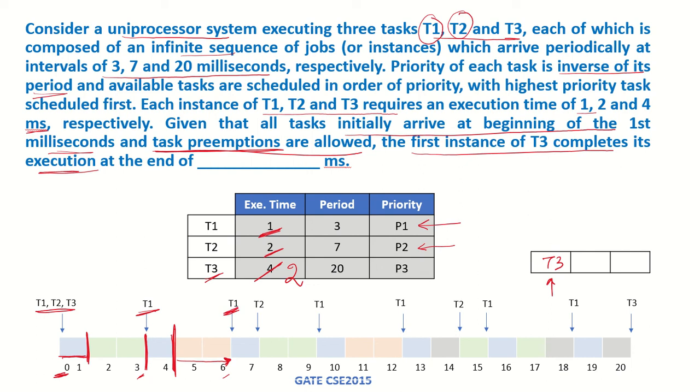Since T1 has higher priority, again it will run for 1 time unit. Now at 7, T2 also has come in the queue. T2 has arrived because now it is interval of 7 time units. It is arriving at every 7 time units. So T2 has also arrived.